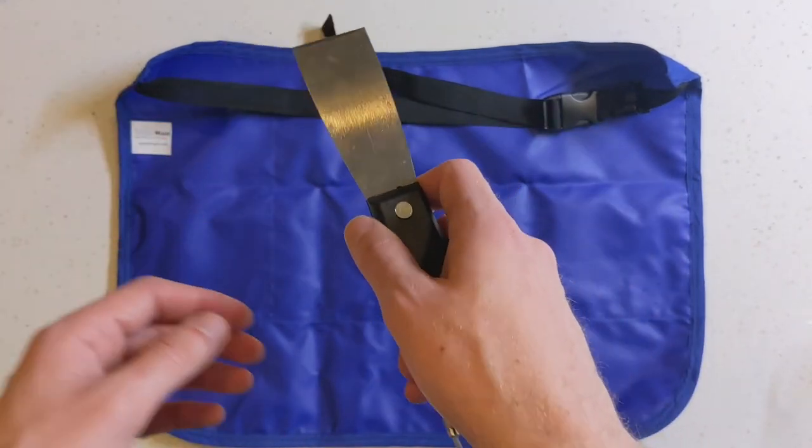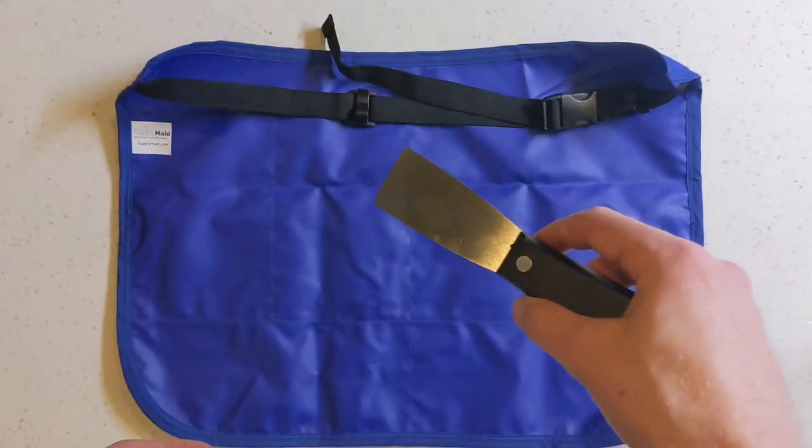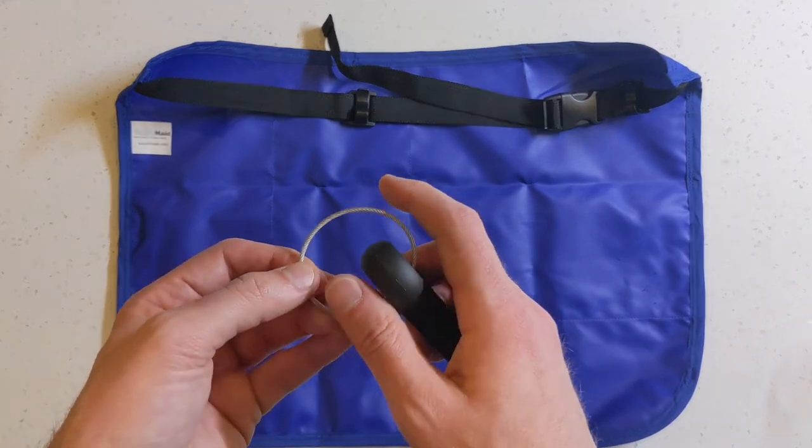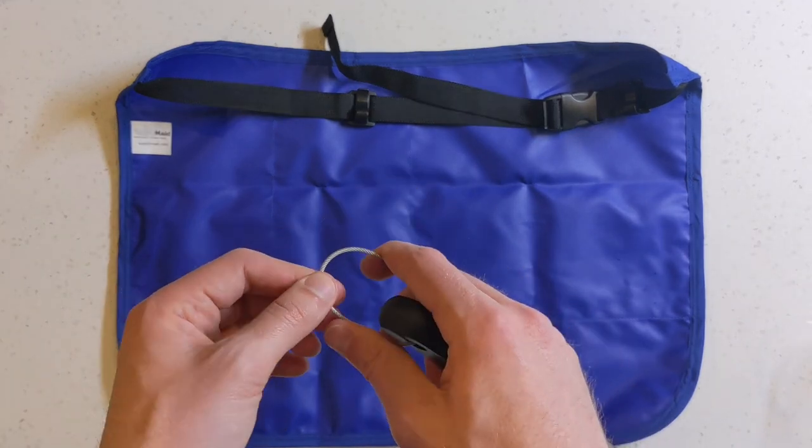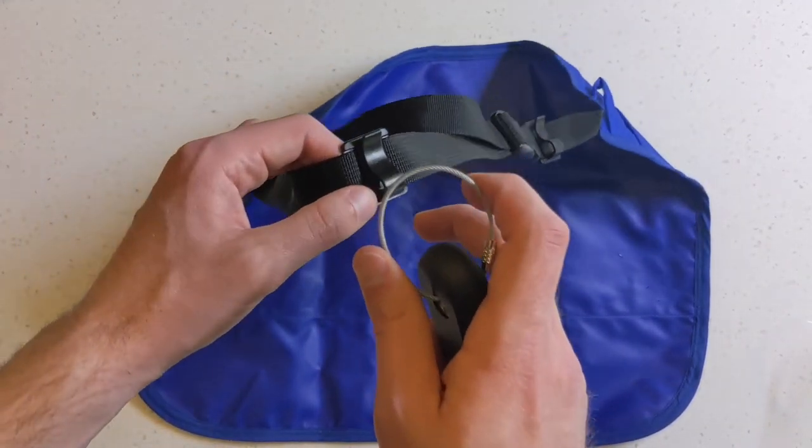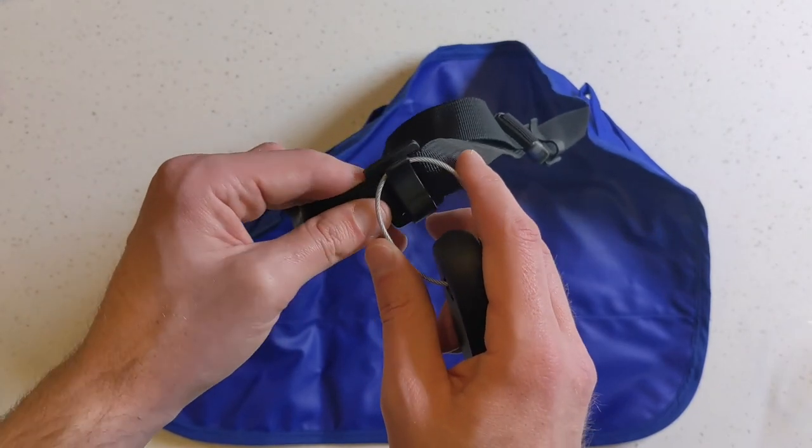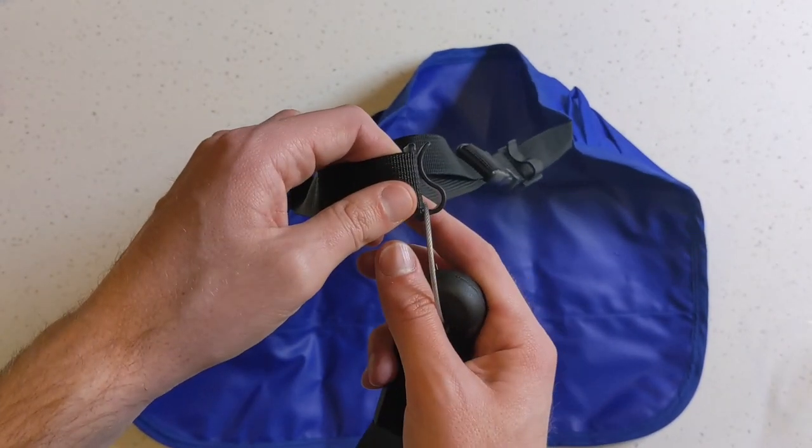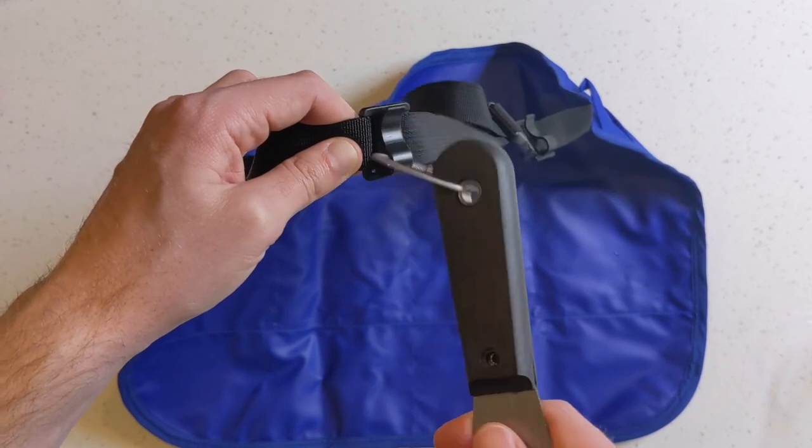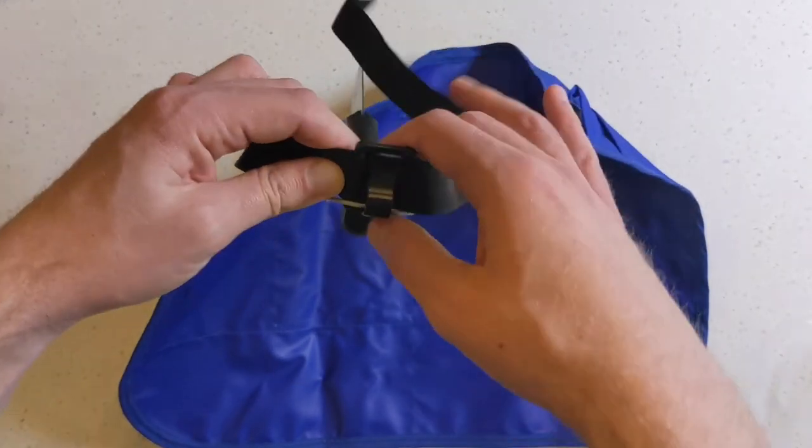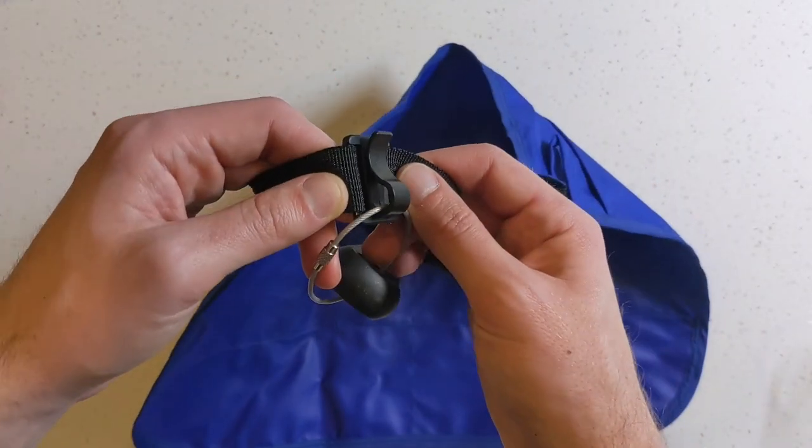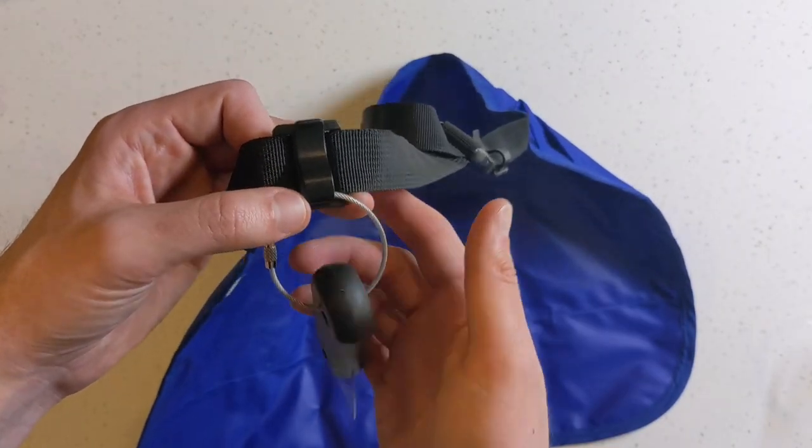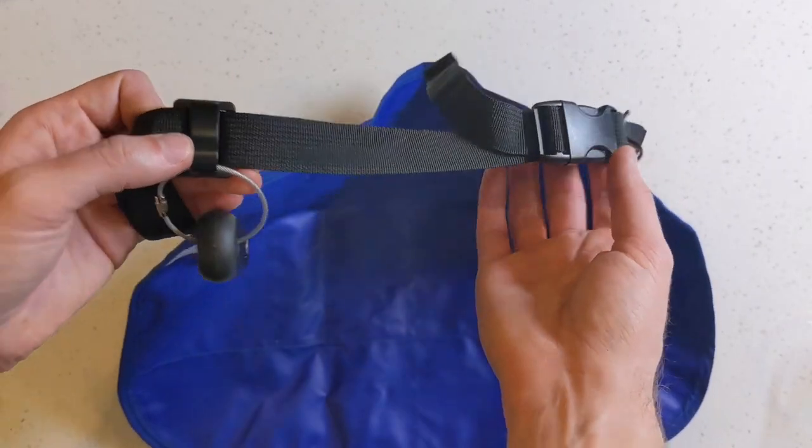When you're done using your tool, all you do is reach behind you around your back and clip this right on. It slides right in there, but no amount of moving around or jumping around will get it to come off. You'll have access to two of these, one on each side.